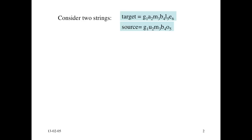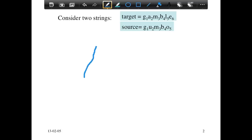Let's take these particular source and target strings. The source string is 'gumbo', which has five characters, and the target string is 'gamble', which has six characters. We want the sequence of edits that will take us from the source to the target. It's fairly easy to see that the G should get aligned with a cost of zero.